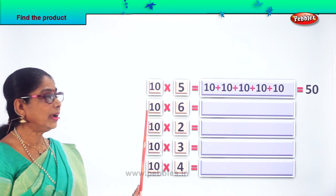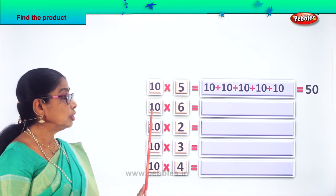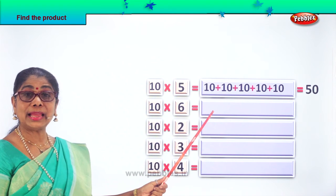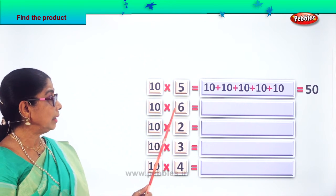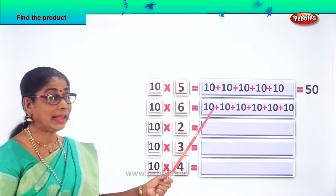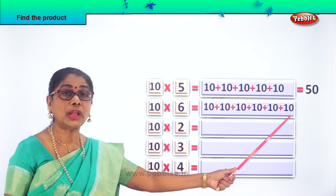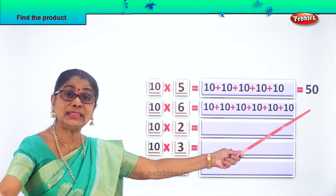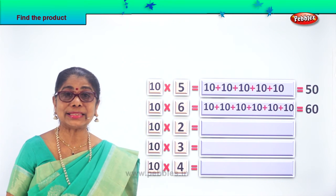Good. Next, find the product of 10 into 6. So we write 10 six times: 10 plus 10 plus 10 plus 10 plus 10 plus 10 plus 10 — 6 times 10. Find the product of 10 into 6 — we write 10 six times. What are 10 sixes? 10 sixes are 60. 10 into 6 is equal to 60.